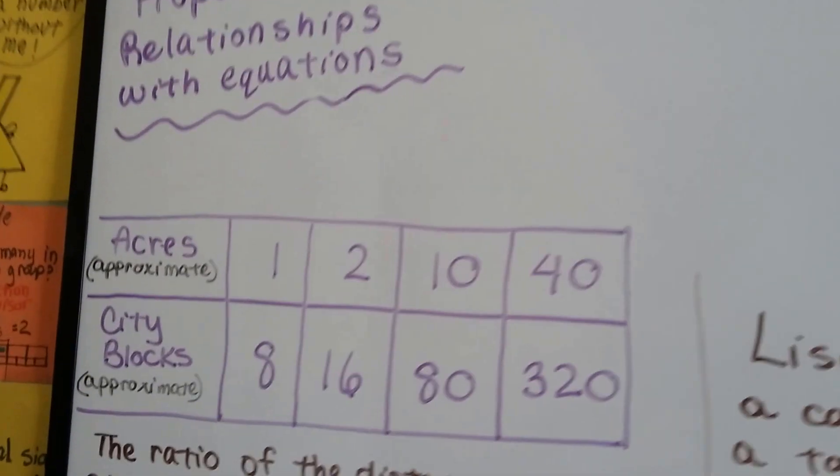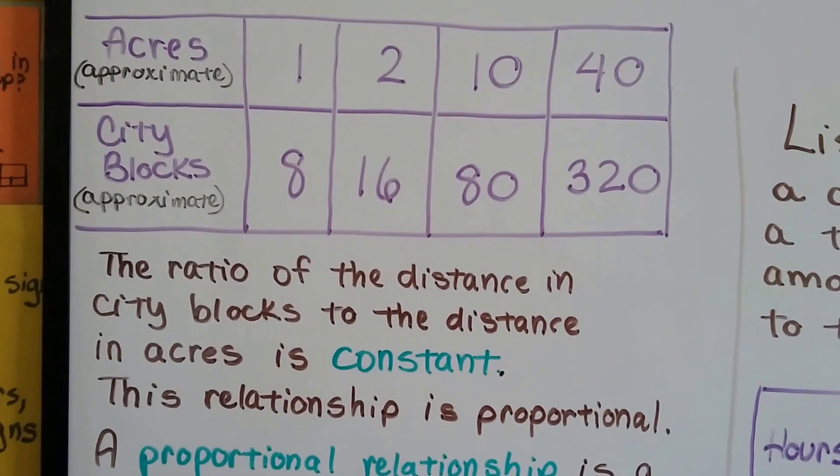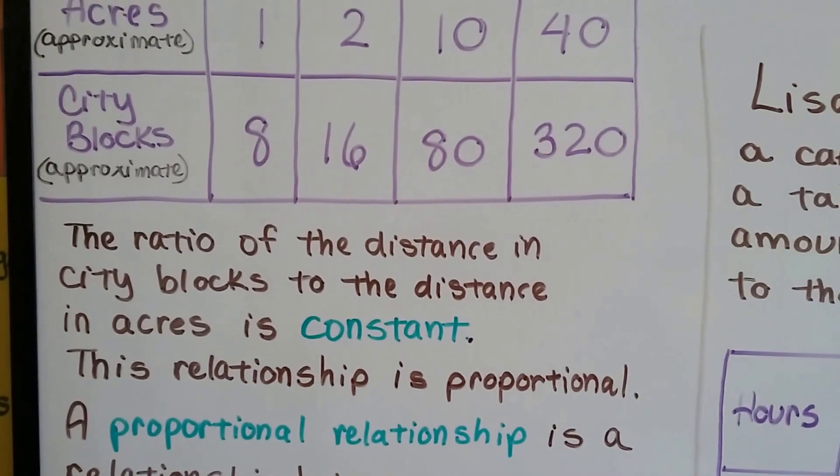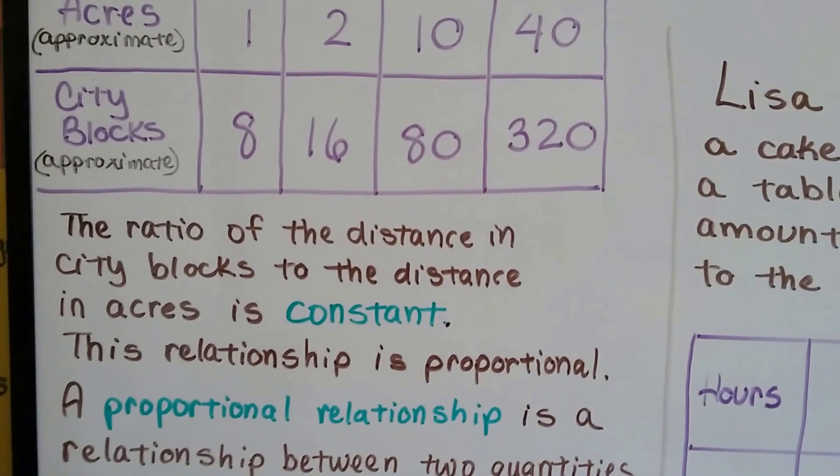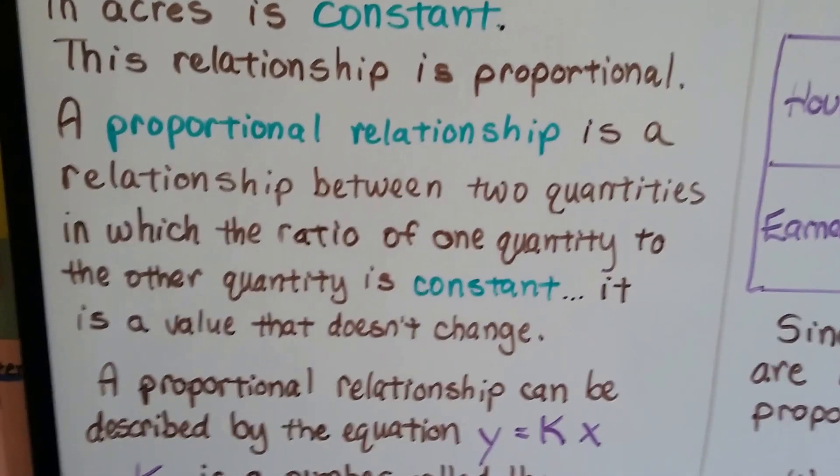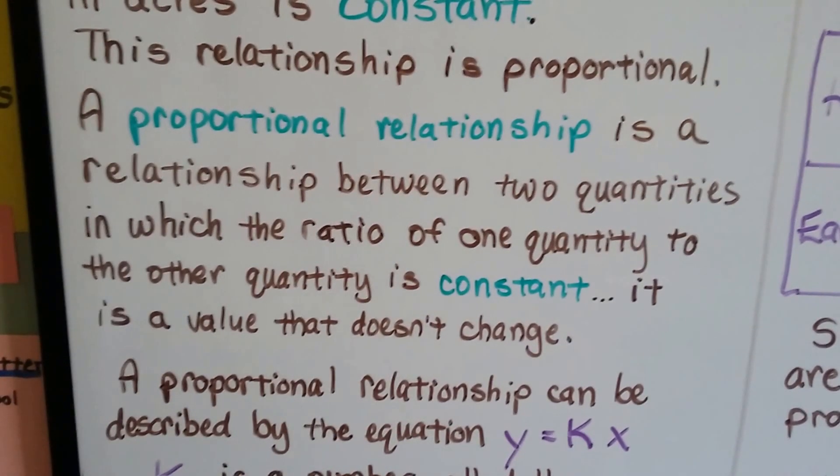So this is Proportional Relationships with Equations. In the last video, we did acres compared to city blocks, and we came up with this table. And the ratio of the distance in city blocks to the distance in acres is constant. This relationship is proportional. A proportional relationship is a relationship between two quantities in which the ratio of one quantity to the other quantity is constant.